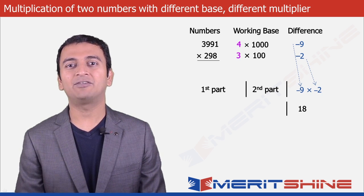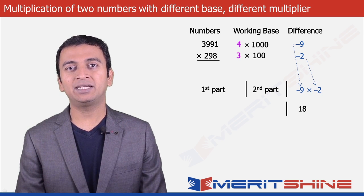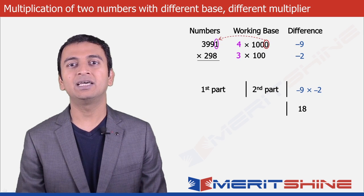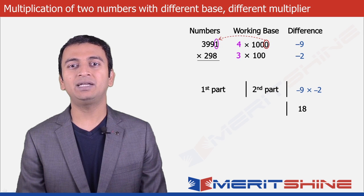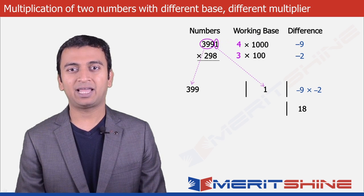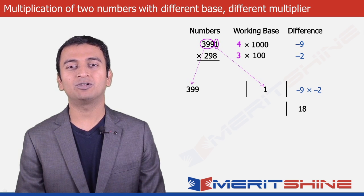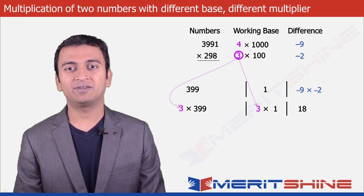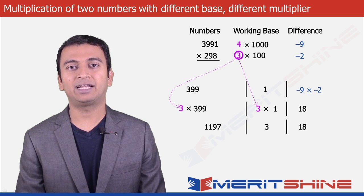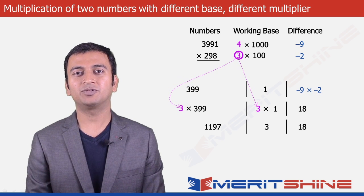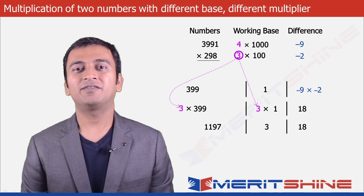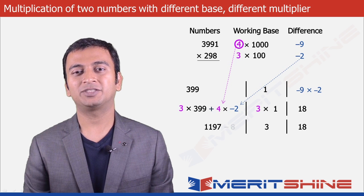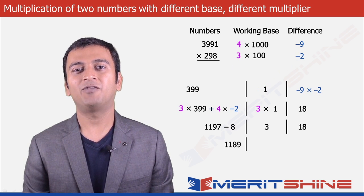To obtain the second part we will have to choose the larger number and take as many digits from the right as is the difference in the number of zeros in our working bases, which is 3 minus 2, equal to 1. So we will split 3991 as 399 and 1. 399 along with the second multiplier 3 will go to the first part, and 1 along with the second multiplier 3 will go to the second part, making the first part 3 into 399 equals 1197, and the second part 3 into 1 equals 3. The last step is to add the product of the first multiplier and second difference, which is 4 into minus 2, equals minus 8, added to 1197, giving us 1189.